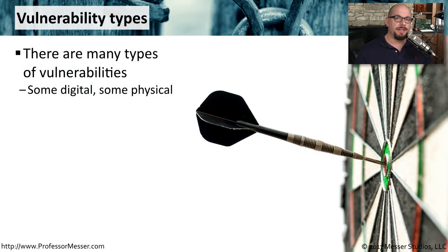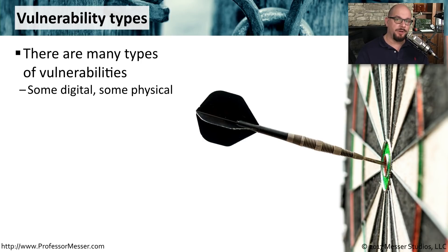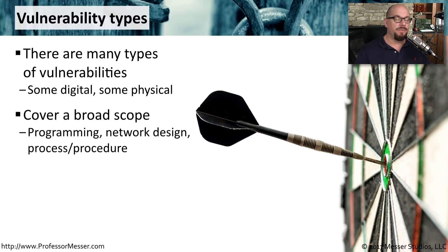When a security researcher finds a vulnerability in an operating system or an application, they qualify the type of vulnerability that it is. There are many different kinds of vulnerabilities. Some are digital and based in code, and others are physical and based in the world around us. They cover a very broad scope. Many of them are based on programming or coding type of errors, some might be network design problems, and others just might be a different procedure that causes the vulnerability to occur.